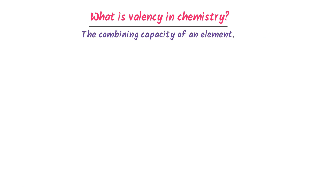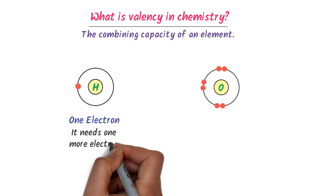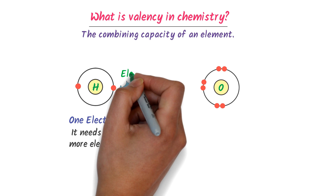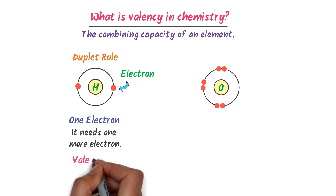For example, consider hydrogen atom and oxygen atom. There is only one electron present in the outermost shell of hydrogen atom. This hydrogen atom needs one more electron to gain stability. After gaining one more electron, the duplet rule of hydrogen atom is completed. So we say that the valency of hydrogen atom is one.